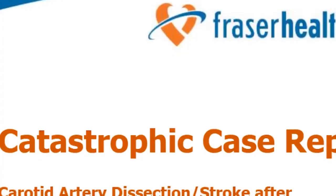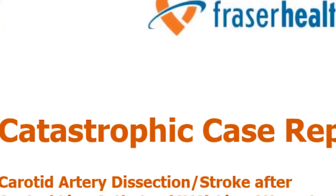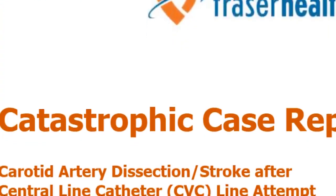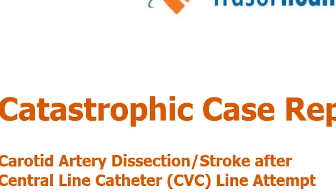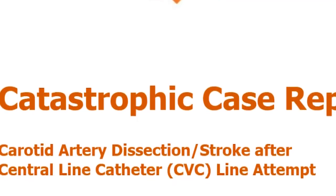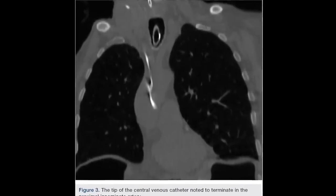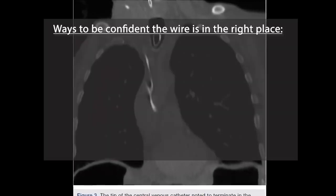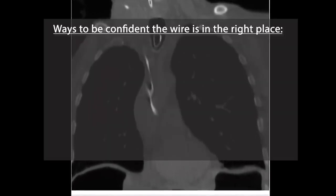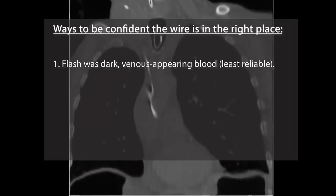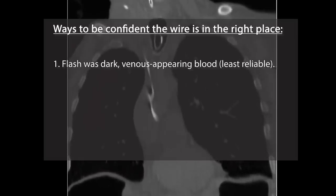Speaking of embarrassing calls, now is a good time to confirm placement of the wire. If you accidentally wired up the carotid, it's not too late. You can still remove it and hold pressure for several minutes and see if you can get away with it. But if you go to the next step and you dilate the carotid artery, you will need to call vascular. Here is how I am confident that I put the wire in the right spot. One, the initial flash was dark venous appearing blood.